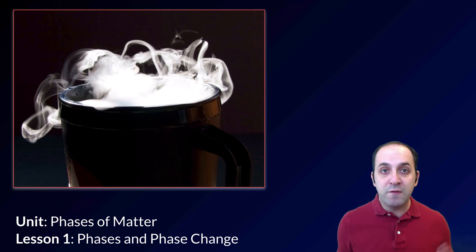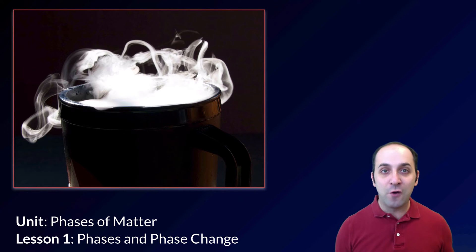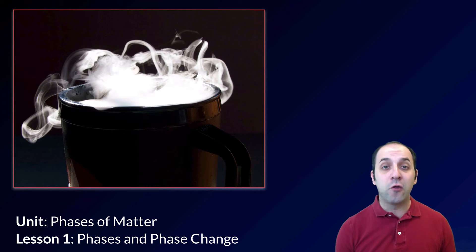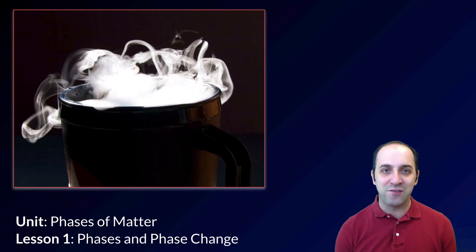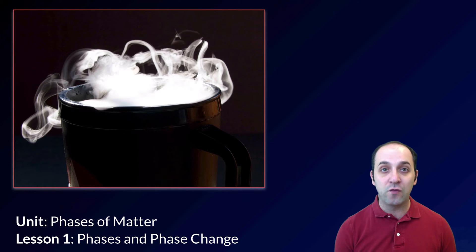You're probably familiar with the fact that there are different phases of matter already. We're really only going to focus on the three major phases of matter that we see on this planet, which are solids, liquids, and gases. There are other phases of matter, particularly plasma, which is the state that matter exists in things like the sun, but we don't really need to worry too much about those for the purpose of this course.